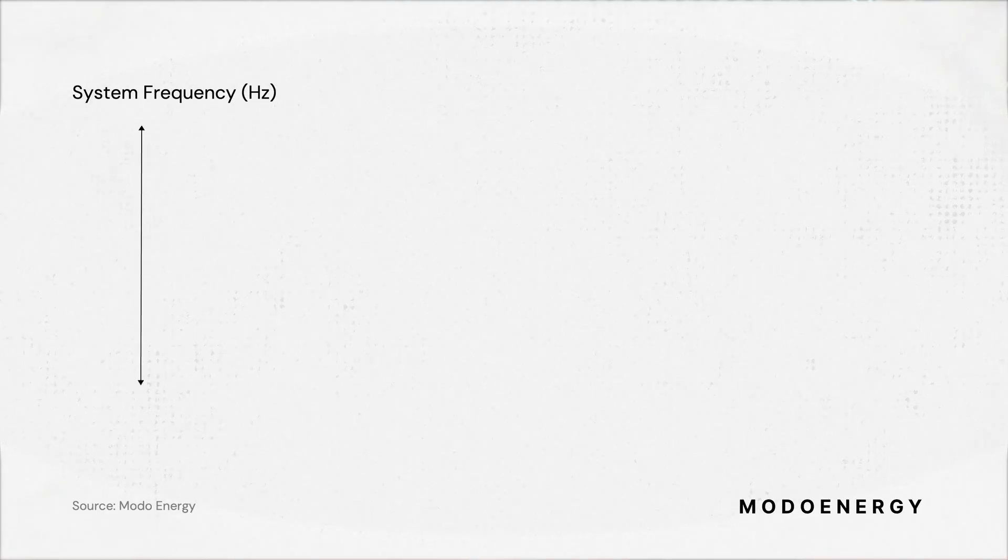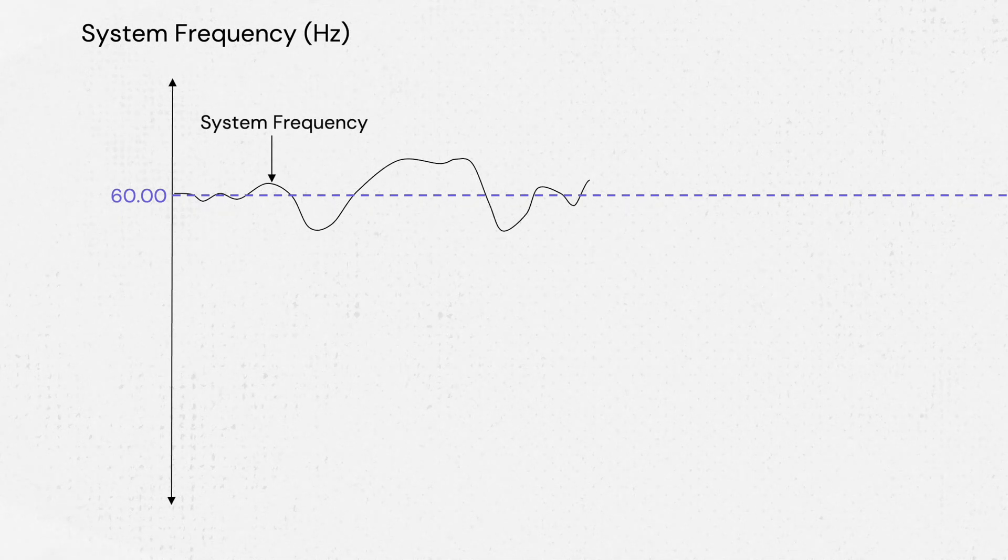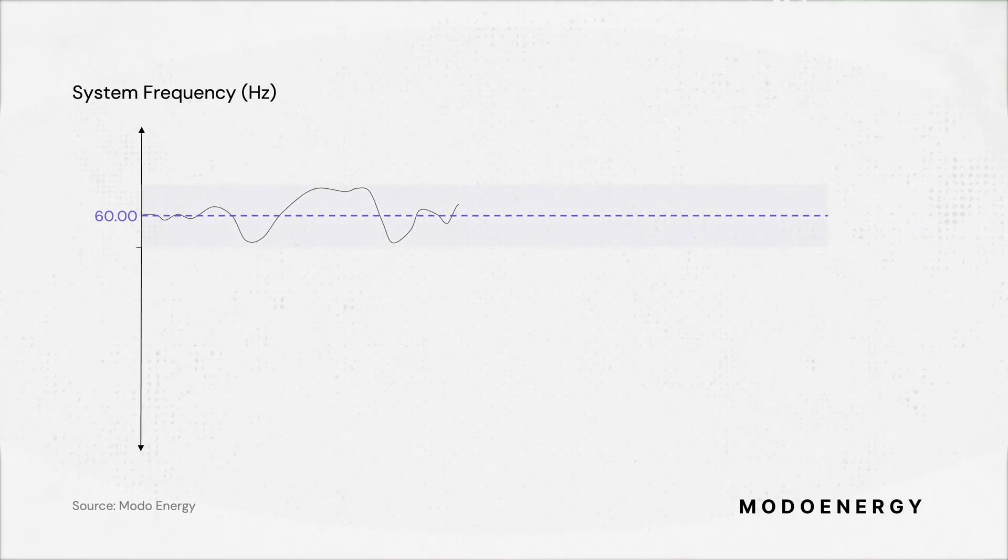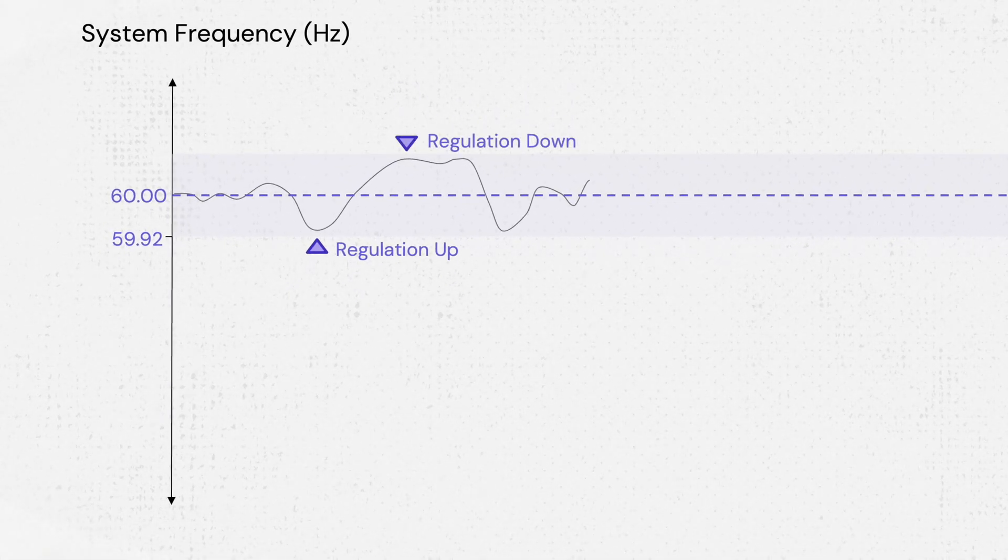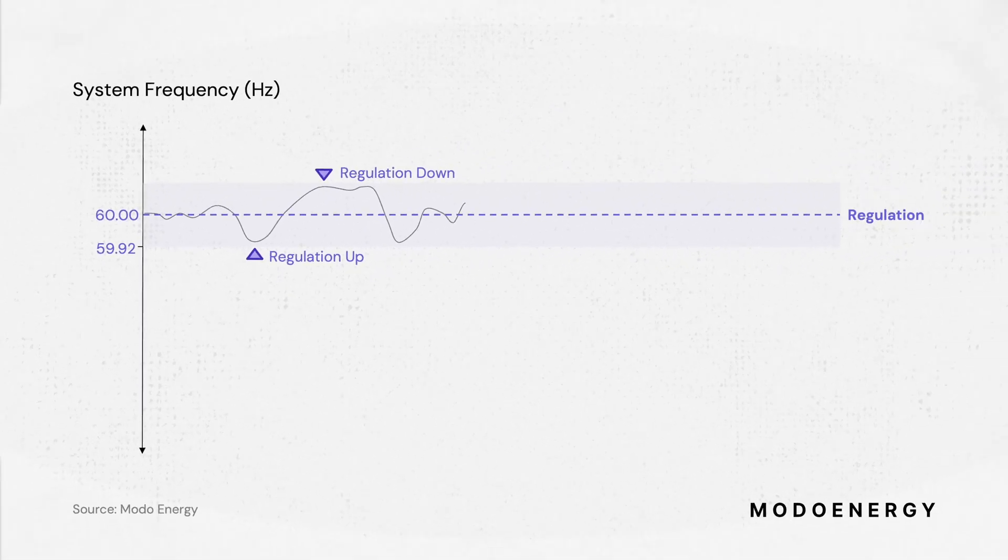In this graph, we can see system frequency fluctuating at around 60 hertz. This is due to small changes in supply and demand that occur continuously throughout the day. The regulation up and down services correct these fluctuations and keep frequency in check. These services are constantly running.